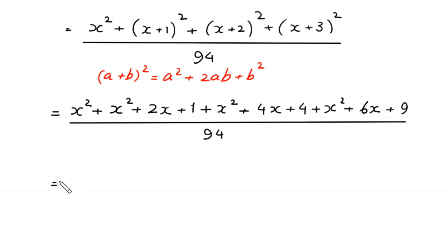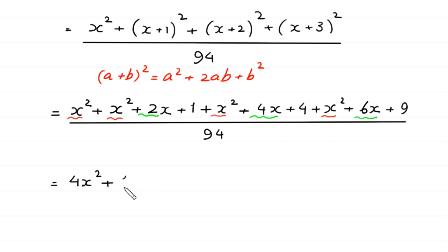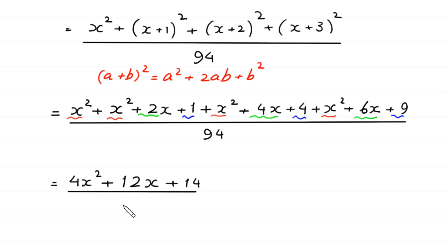Next, collecting like terms: the four x squared terms combine to give 4x squared. The x-terms give 2x plus 4x plus 6x, which equals 12x. The constants give 1 plus 4 plus 9, which equals 14. So the numerator becomes 4x squared plus 12x plus 14, divided by 94.